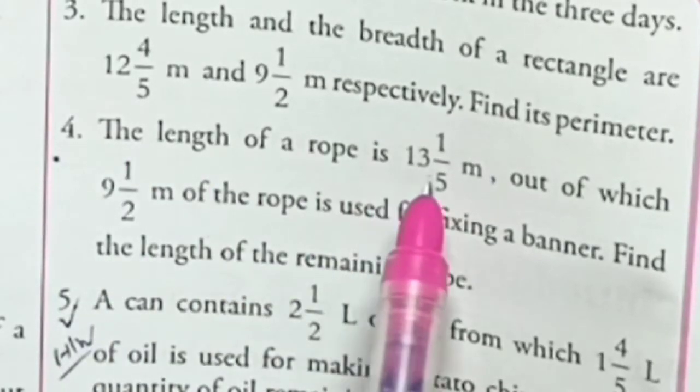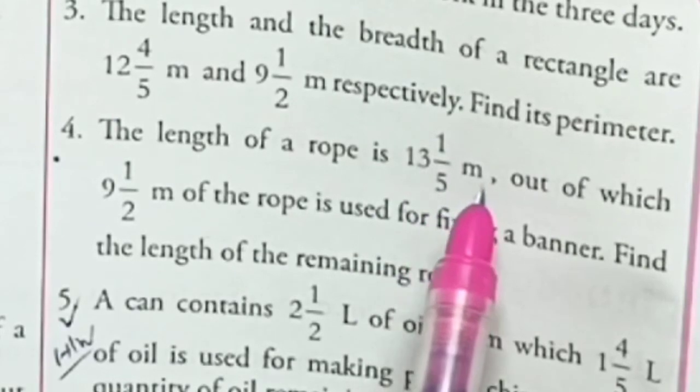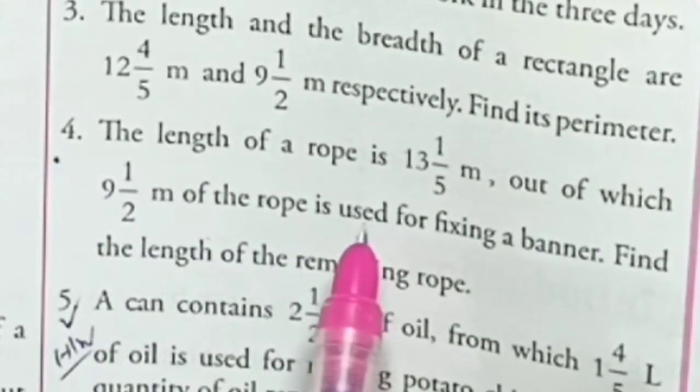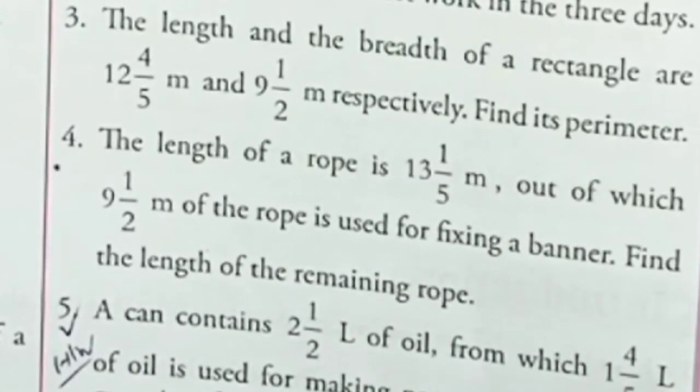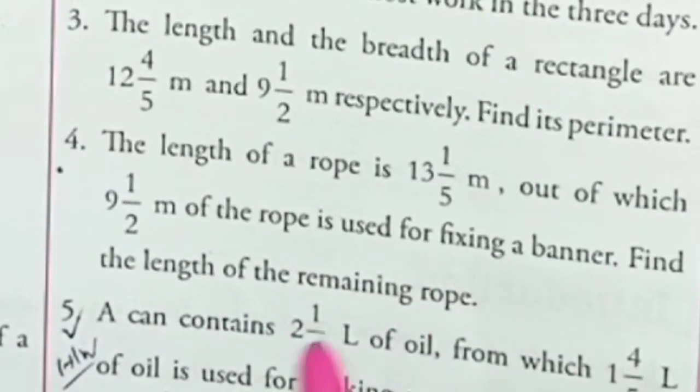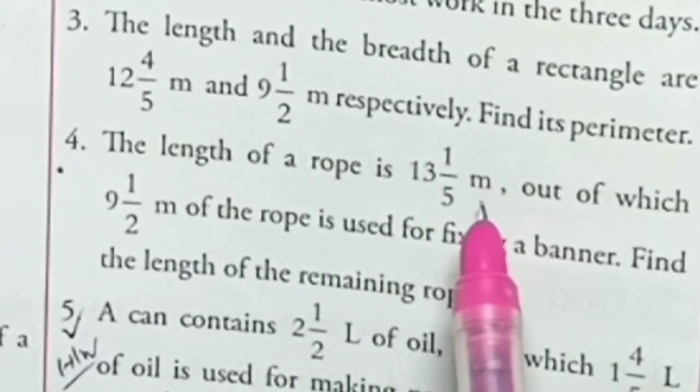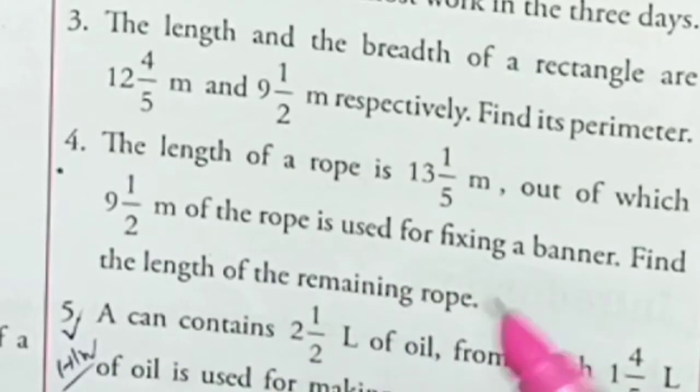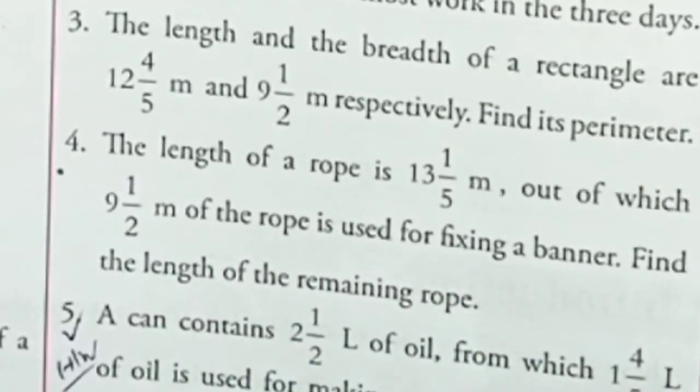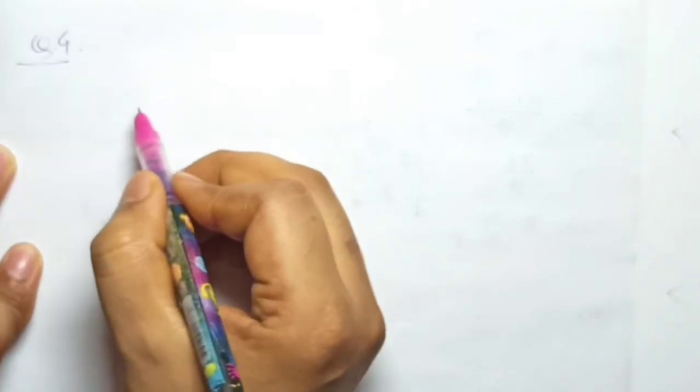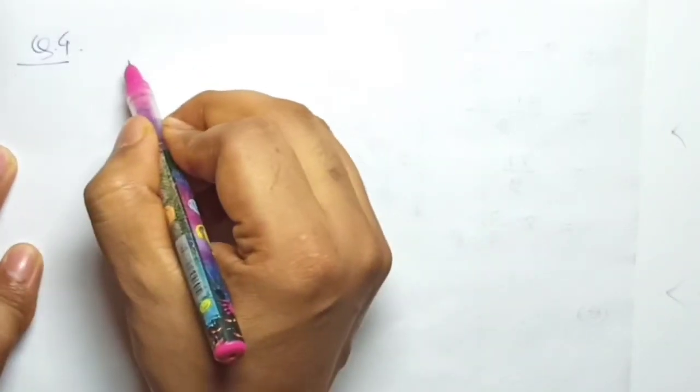Question four: The length of a rope is 13 and 1/5 meter, out of which 9 and 1/2 meter of the rope is used for fixing a banner. Find the length of the remaining rope.